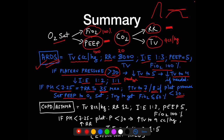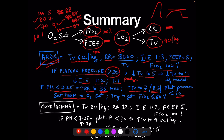For PEEP titration: start FiO2 100%, PEEP 5, target saturation around 88–92%. Increase PEEP to 7 — if saturation improves, try reducing FiO2 to 80%; if saturation holds, increase PEEP to 9 and try FiO2 70%. If increasing PEEP to 11 drops saturation to 84%, go back to PEEP 9 at FiO2 70%. The goal is to reduce FiO2 toward 60% if possible, to prevent oxygen-induced absorption atelectasis from nitrogen washout.